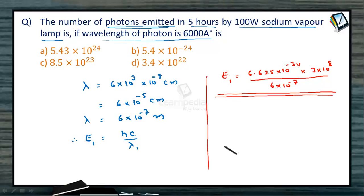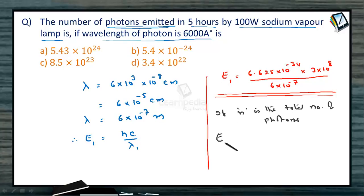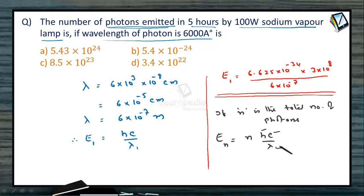How many such photons correspond to the total energy? If N is the total number of photons, then the energy corresponding to N photons will become N × hc/λ. We know h, we know c, we know λ, and hc/λ we have already worked out.